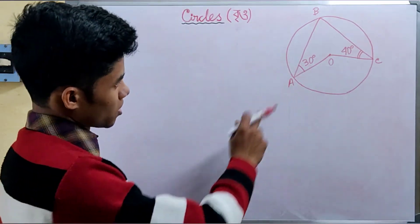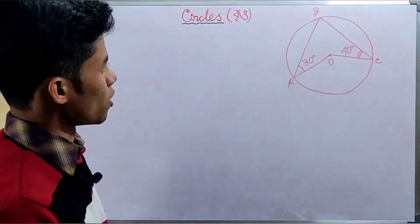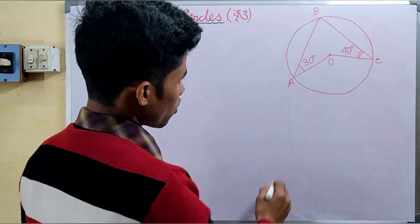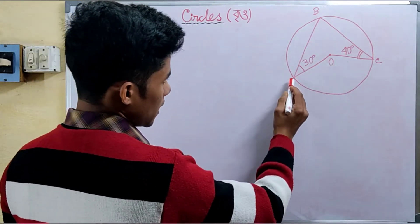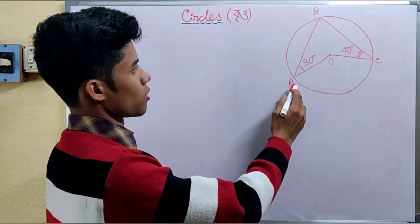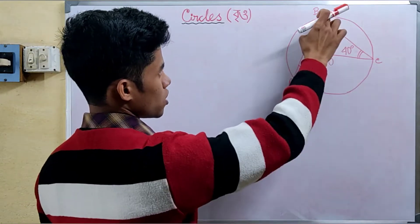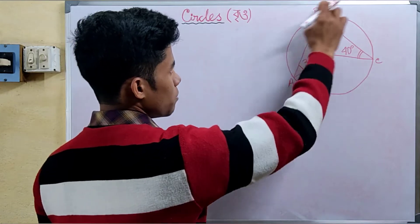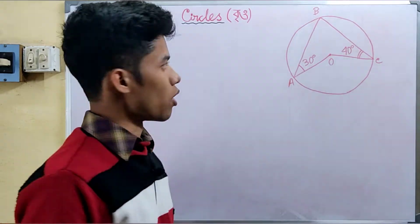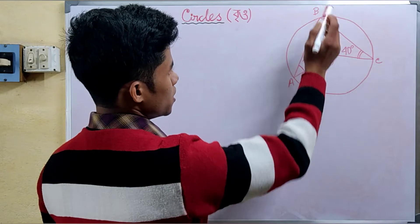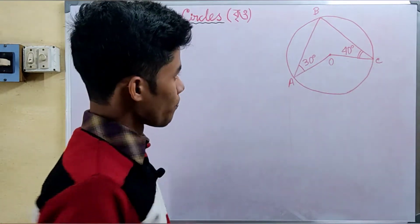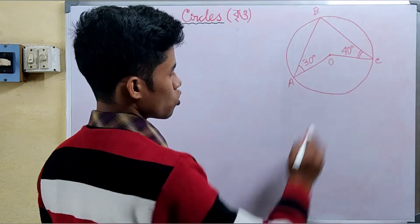The first problem: the circle has center O and arc AC. The arc AC is on the opposite side, meaning point B is on the arc ABC. Now, join ABC and join A-O-C.